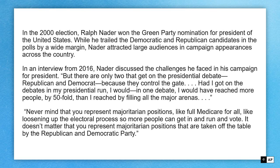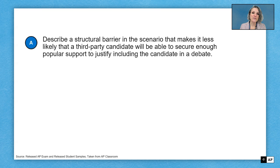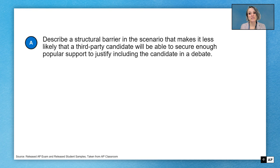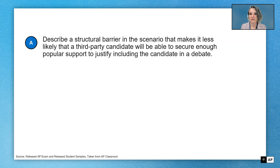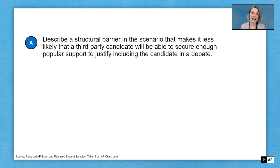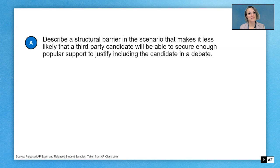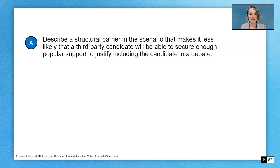Welcome back. Our first question is to describe a structural barrier in the scenario that makes it less likely a third-party candidate will be able to secure enough popular support to justify including the candidate in a debate. Pause the video again, look back at the stimulus, and construct an answer. I'll show you an exemplar of what would earn points in a minute.